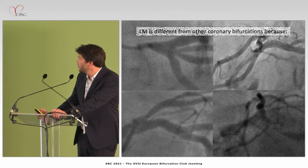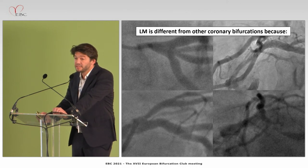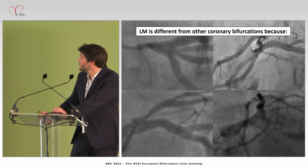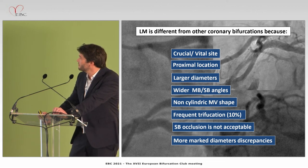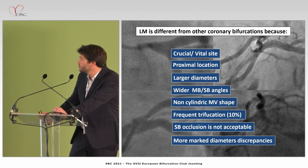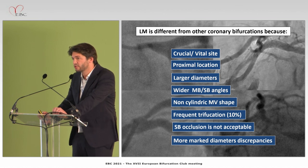We know that the left main is different from other coronary bifurcations because it's in a vital site and has a very proximal location — it's the most proximal bifurcation. The left main also has larger diameters, wider main branch and side branch angles compared to other bifurcations. There is frequent non-cylindric shape of the main vessel and also frequent involvement of trifurcation in around 10% of cases.